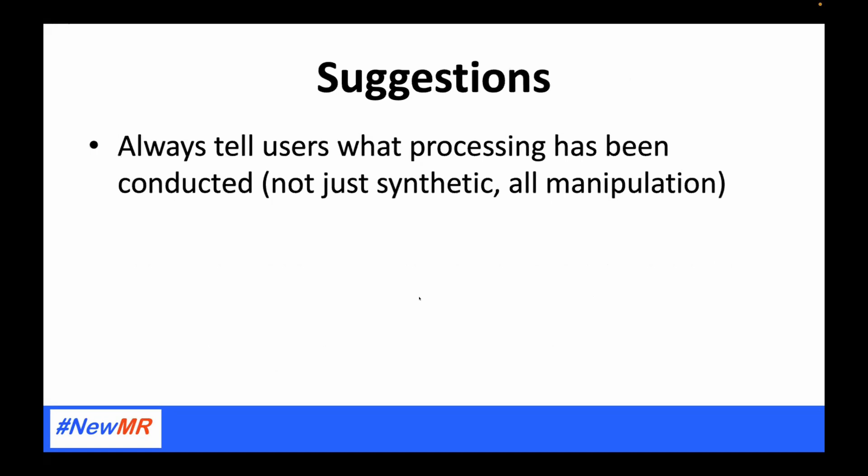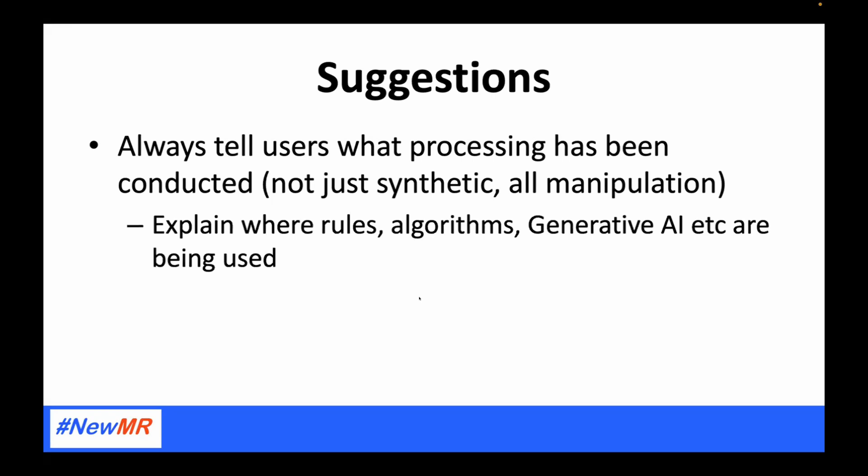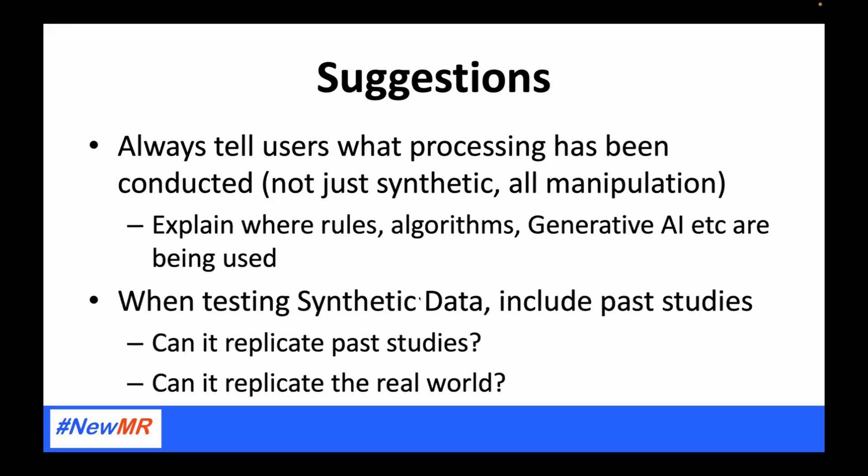My suggestions: always tell users what processing has been conducted — and I don't mean just tell them about the synthetic manipulation. If you have rebased the data, if you've excluded outliers, you ought to be telling users about that. And of course, with synthetic data, explain where rules, algorithms, and generative AI are being used in that process. When testing synthetic data, include past studies — can it replicate them? So take some old survey data and see if you can generate the same survey responses using the synthetic approach.